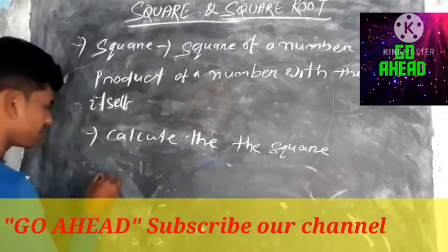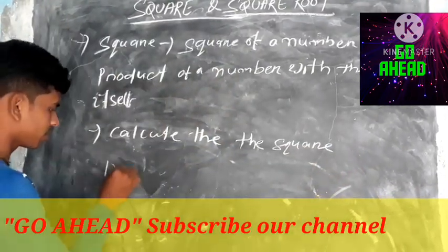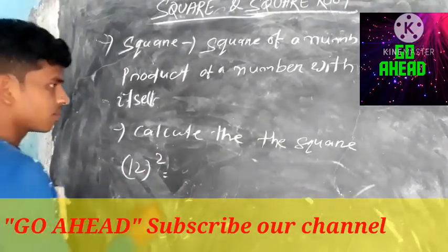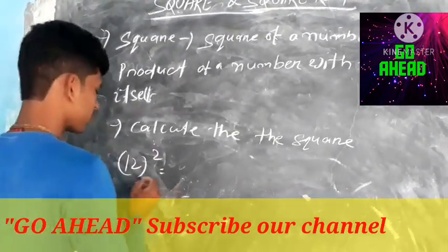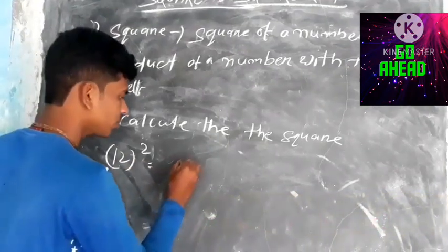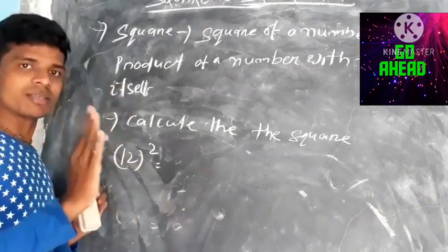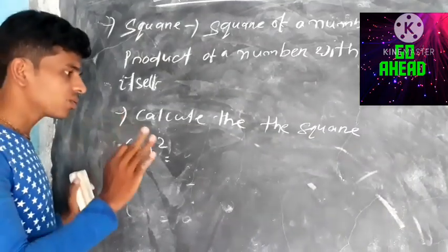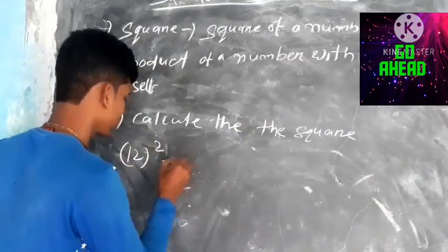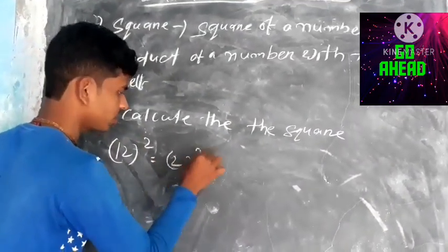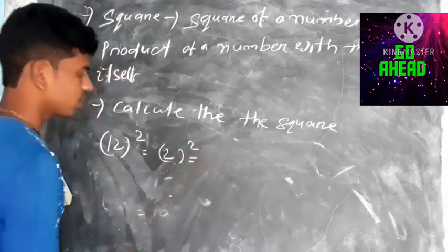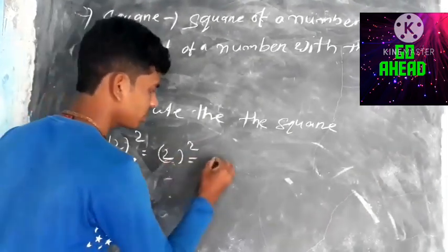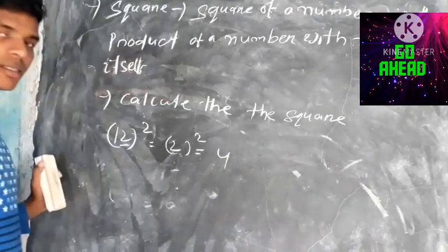Square of 12. There are three steps you mostly need to remember. First, we need to calculate the square of 2, which is 4. Second step: is the number greater than 10? 12 is greater than 10 by 2.